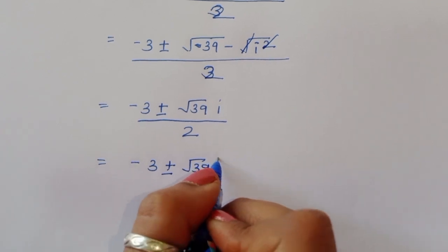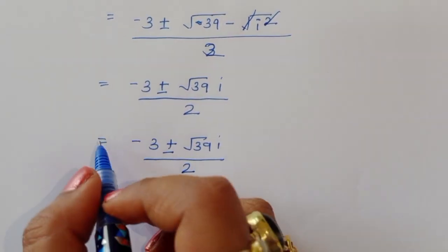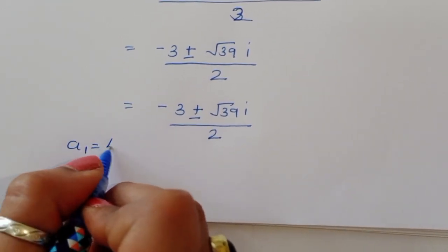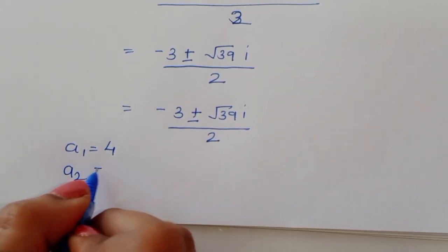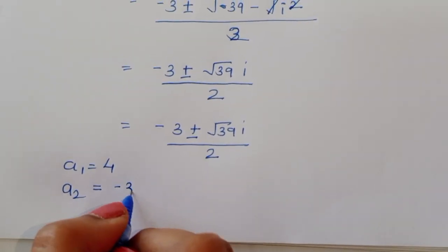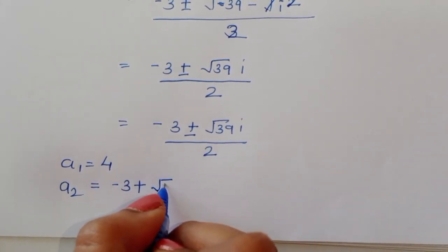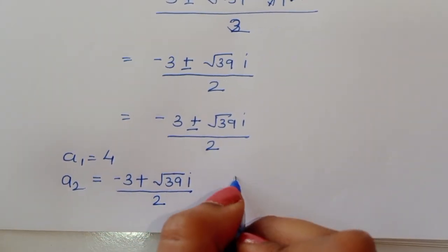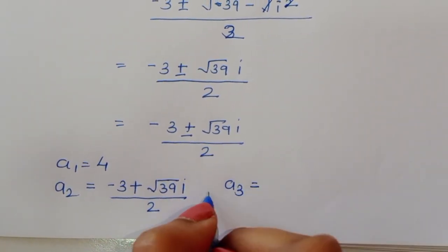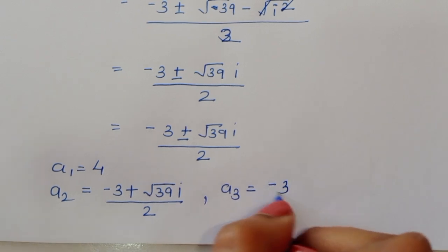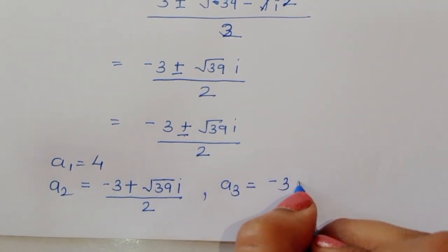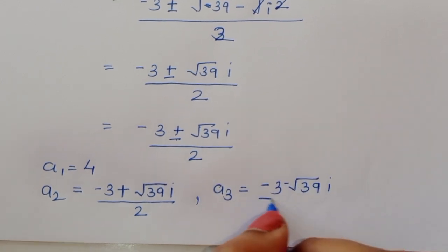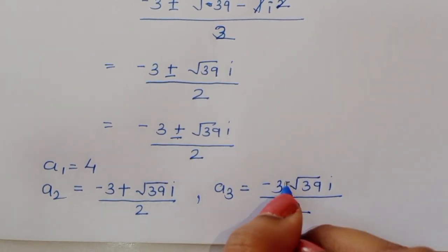So the three solutions are: a₁ = 4, a₂ = (-3 + √39 · i) / 2, and a₃ = (-3 - √39 · i) / 2. This is the complete solution.